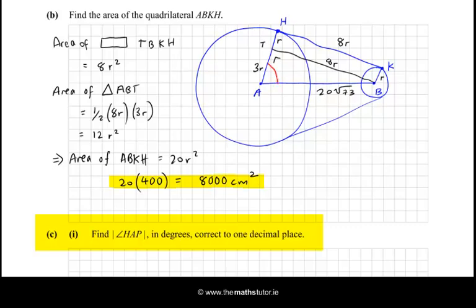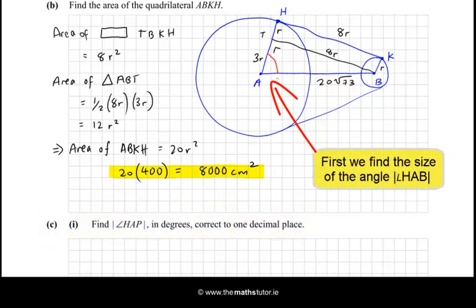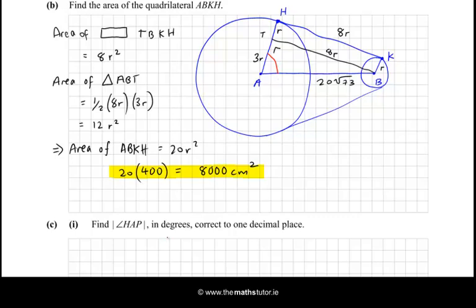Now, find the size of the angle HAP in degrees, correct to one decimal place. Okay, I could use either tan or sine or cosine. So, I think I'll use tan, and we have 8r over 3r. So let's go tan of the angle, I'm going to call the angle theta, is opposite over hypotenuse, so that'll be 8r over 3r, which is 8 over 3. Therefore, tan inverse of 8 over 3 is theta.